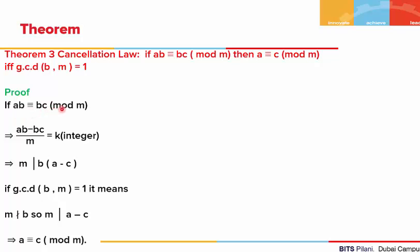Let's prove this. We are given ab is congruent to bc mod of m. From the definition, ab minus bc is divisible by m, equal to some integer k. This means m divides b(a minus c). So either m divides b or m divides (a minus c). If gcd(b, m) equals 1, then m will not divide b. If m does not divide b, m must divide (a minus c) to give an integer. So if b is not divisible by m, then m divides (a minus c), meaning a is congruent to c. We can only cancel that factor from both sides of the congruence which is relatively prime to m.